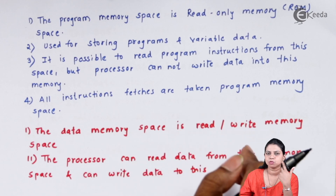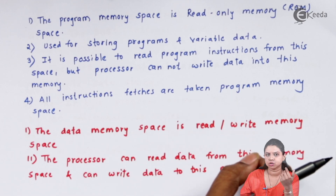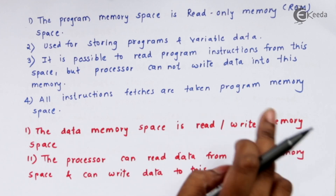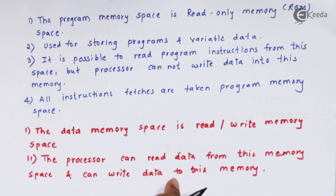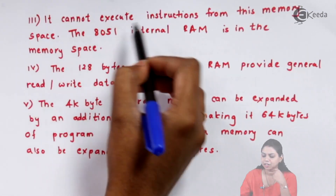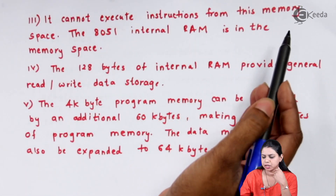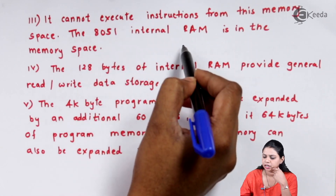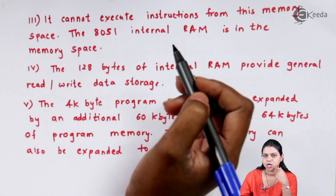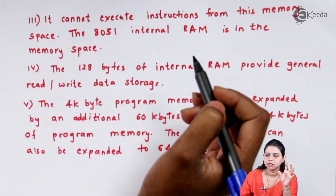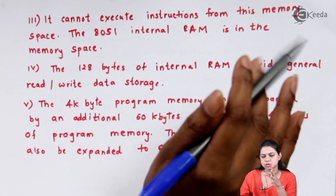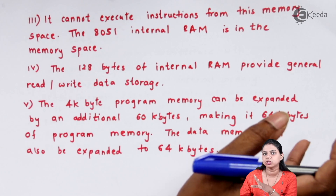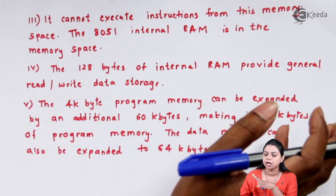The data memory space is both readable and writable — it is a read-write memory space. A processor can read data and also write into it. However, we cannot execute instructions from this memory space.